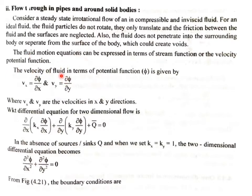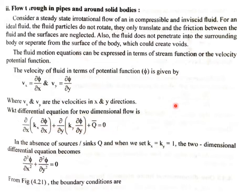The fluid motion equations can be expressed in terms of stream function or the velocity potential function. The velocity of fluid in terms of potential function φ is: Vx = ∂φ/∂x and Vy = ∂φ/∂y, where Vx and Vy are the velocities in the x and y directions. The differential equation for two-dimensional flow is: ∂/∂x(Kx · ∂φ/∂x) + ∂/∂y(Ky · ∂φ/∂y) + Q̄ = 0.